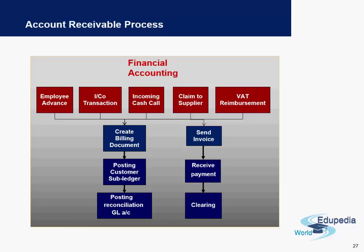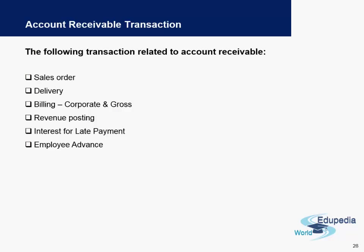Apart from this main process, there are also other transactions affecting financial accounting accounts receivable — for example, intercompany transactions, VAT reimbursements from the government, employee advances, or employee loans. The following transactions are related to accounts receivable mainly: sales order and delivery in the SD module, billing, revenue posting, interest for late payment, and employee advances.